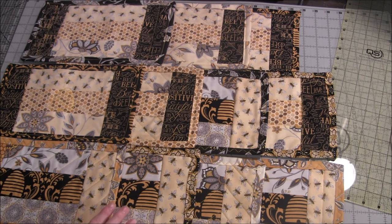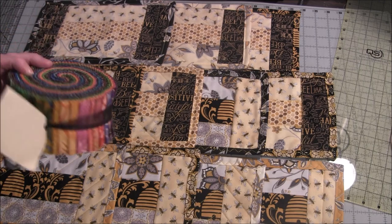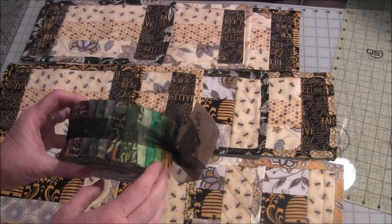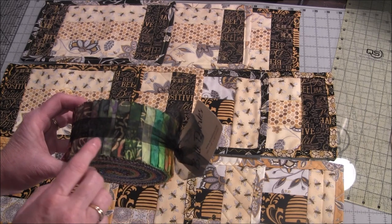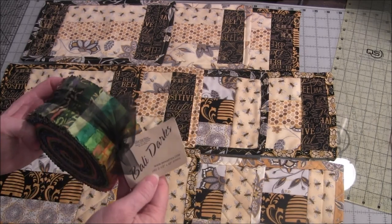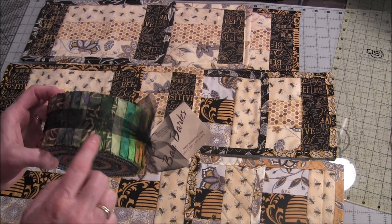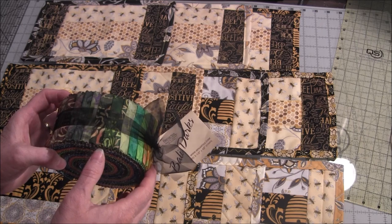These mug rugs can be made from a jelly roll. The jelly roll contains fabrics from a specific line of fabrics and usually gives you a couple of each fabric in the fabric line. They're usually two and a half inch wide strips by the width of the fabric, which is around 42 inches.